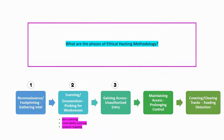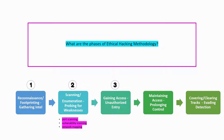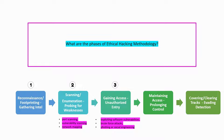The 3rd step is about gaining unauthorized access. Once the vulnerabilities have been identified, the ethical hacker attempts to gain access to the target system or network. This can be done through various methods such as brute force attacks, phishing or social engineering attacks, or exploiting software vulnerabilities.